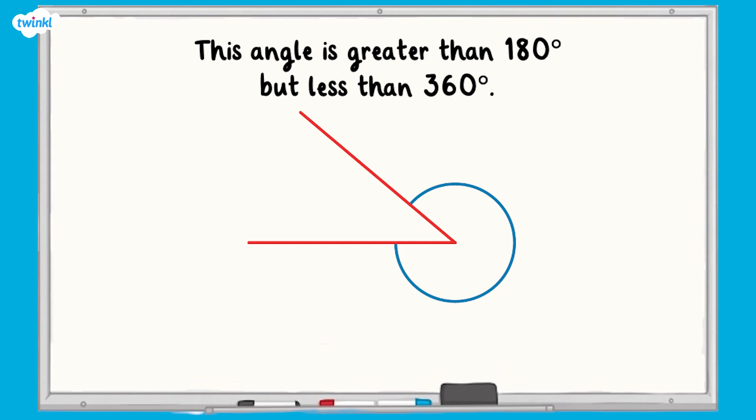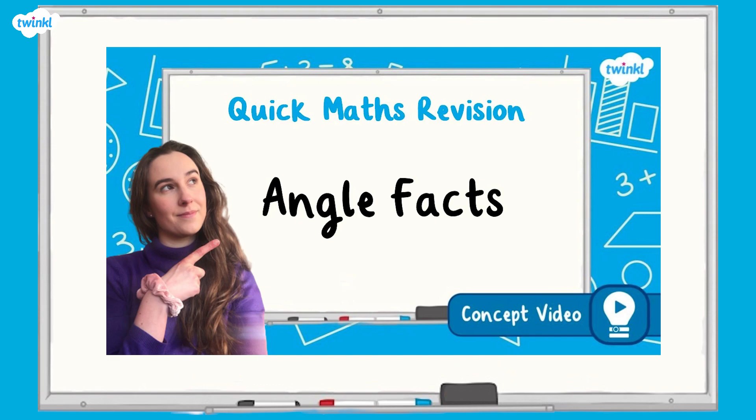This angle is more than 180 degrees but less than 360 degrees which is a full turn. We call this type of angle a reflex angle. If you'd like more help with angles then you can check out our Angle Facts video.